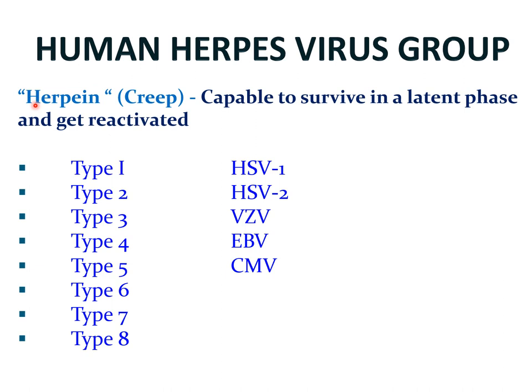The term herpes is derived from the Greek word herpene, meaning 'to creep,' because these viruses are capable of surviving in a latent phase and getting reactivated. There are eight main groups of herpes viruses: type 1 and type 2 are known as herpes simplex viruses, type 3 is varicella zoster virus, type 4 is Epstein-Barr virus, type 5 is cytomegalovirus, and then the less common ones: types 6, 7, and 8. We shall discuss each one of them in detail in the next slides.